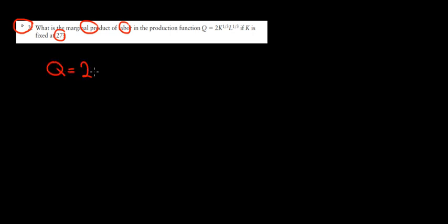So we have q equals to 2 times k to the power of 1 over 3. And we just said that k would be fixed at 27, so that would be 27 to the power of 1 over 3 times l to the power of 1 over 3.